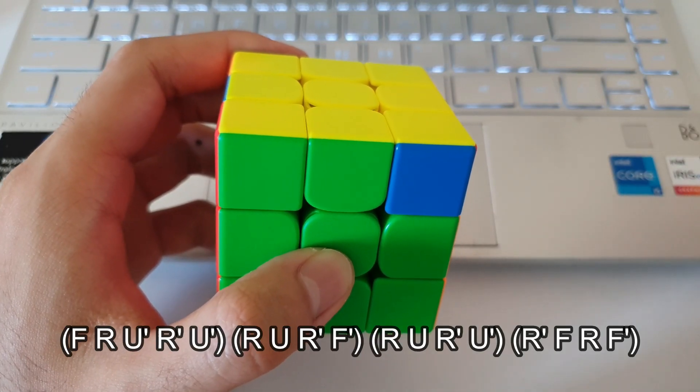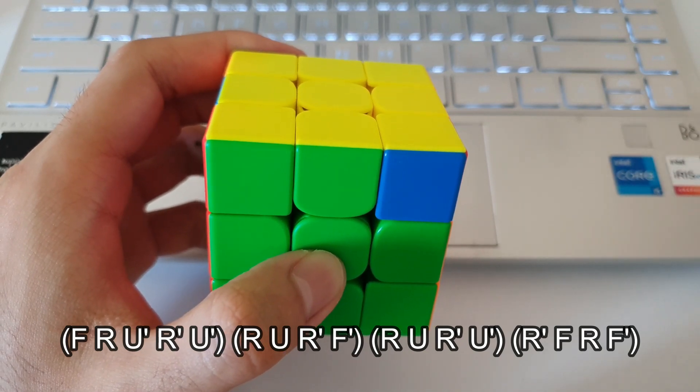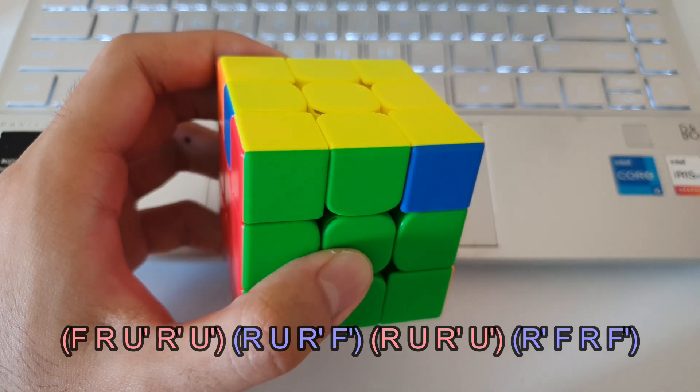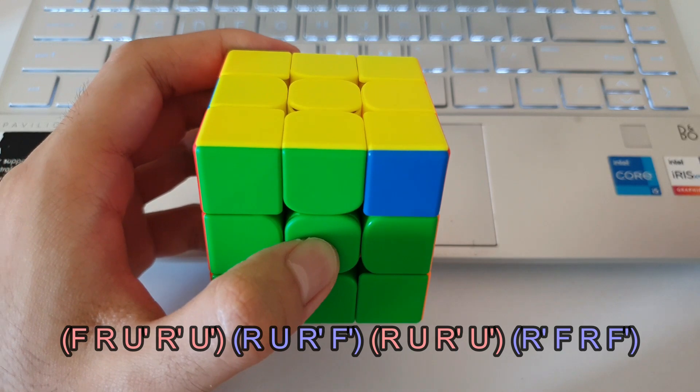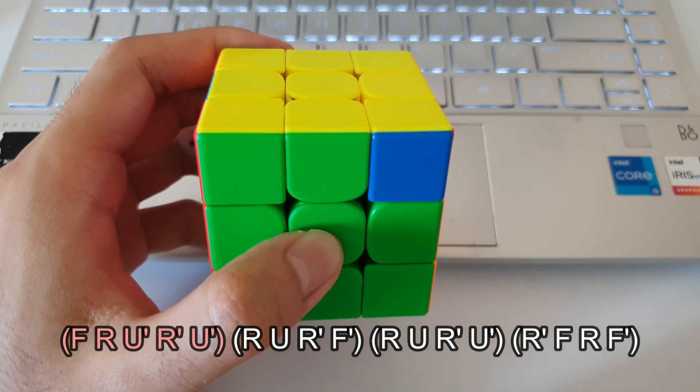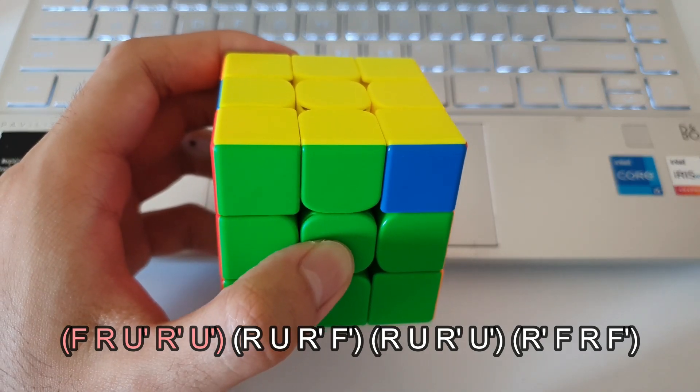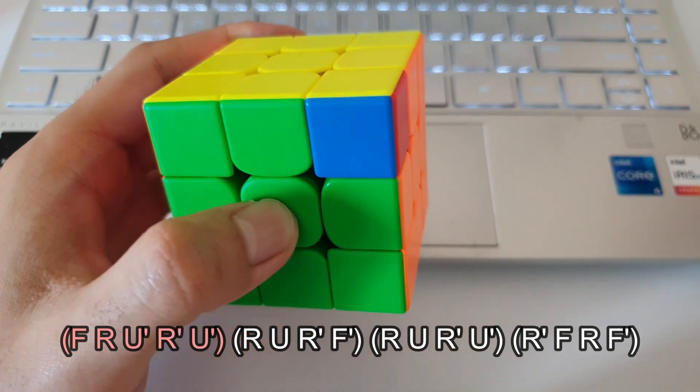As I mentioned before, Y-perms are actually quite easy to remember because there's a lot of common triggers in the algorithm. Even though it is a long algorithm, the common triggers make it very easy to remember. So probably the most difficult part to remember would actually be the first five moves. Because it's not really found in any other triggers, but the rest of the algorithm is definitely quite easy to remember.